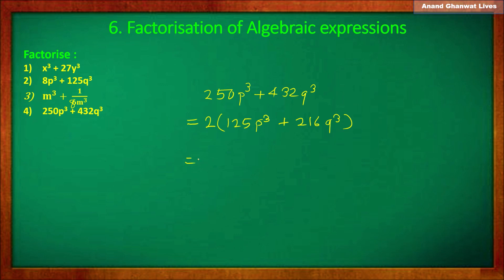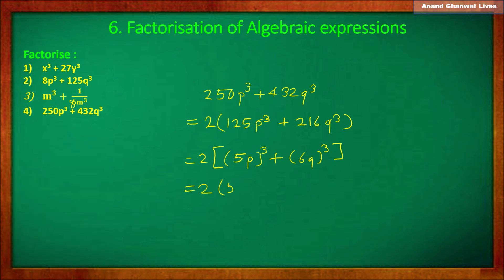So it is equal to 2 into square bracket. Now 125p cube is the cube of 5p, and 216q cube is the cube of 6q. So factorizing in the form of a cube plus b cube: 2 as it is, first bracket (a plus b) that is (5p plus 6q), and into another bracket (a squared minus ab plus b squared), that is square of 5p minus 5p into 6q plus square of 6q.